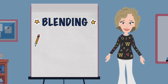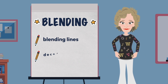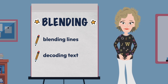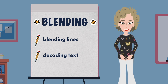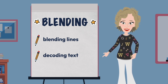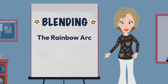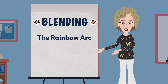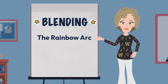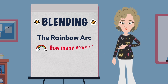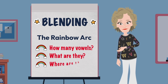A new strategy called blending lines and an old practice of decodable texts — both strategies are designed to provide blending practice using skills previously taught. The last strategy shared was the rainbow arc, which is designed to have students practicing their blending skills while learning a new skill or pattern. This strategy visually shows students the important role vowel sounds play in a word, as evidenced by the red vowel letters, and for each word built, having students ask the questions: How many vowels? What are they? Where are they?